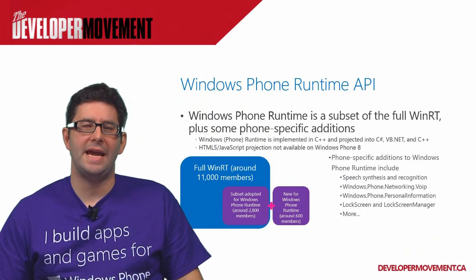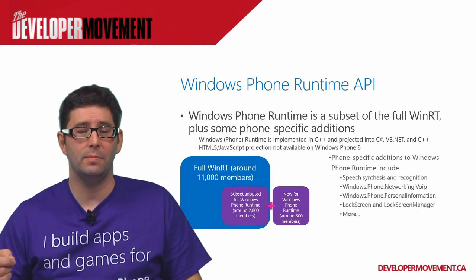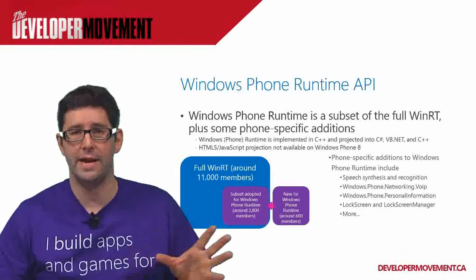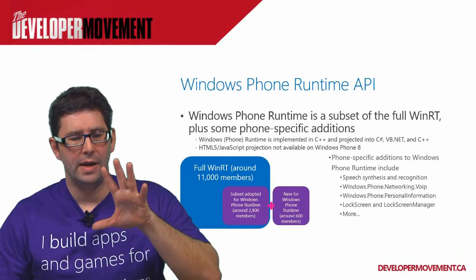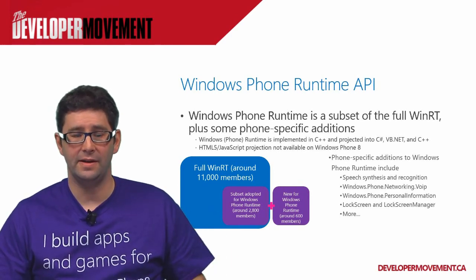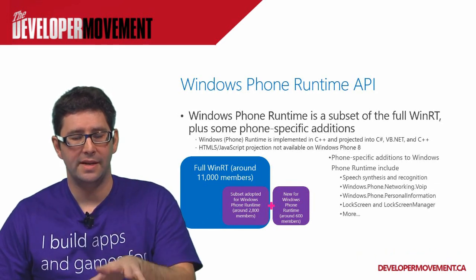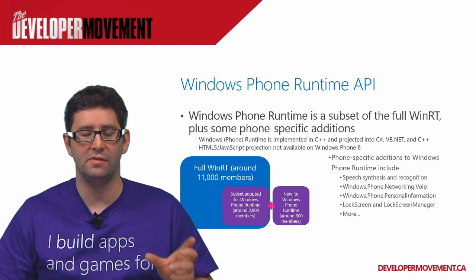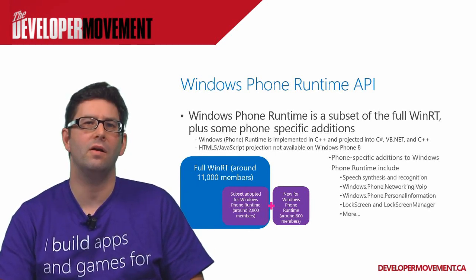With Windows Phone 8, we've added a new platform called the Windows Phone Runtime — WinPRT for short. If you're familiar with Windows 8 programming, WinPRT should be somewhat familiar since it's very similar in naming to WinRT — the Windows Runtime, which is the framework for building modern UI applications on Windows 8. In WinRT there are around 11,000 API members. With Windows Phone 8, around 2,800 of those members are basically the same API calls as WinRT.